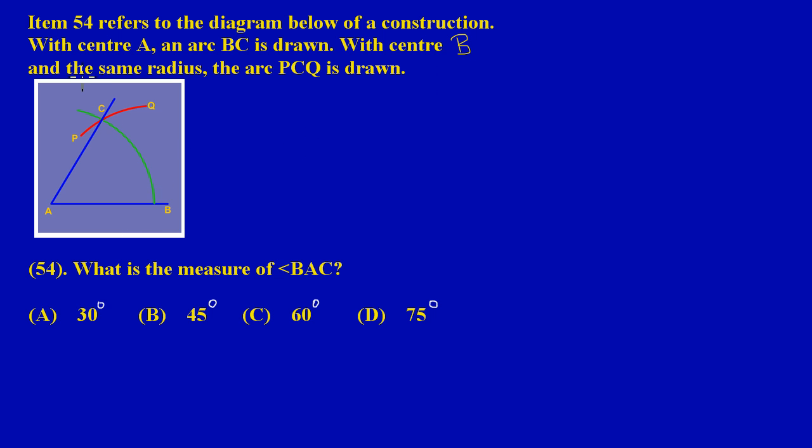What they are saying is, with center B and the same radius of the compass, another arc is drawn, PCQ. Now they're asking us what is the measure of angle BAC, so really they're asking us what is the size of this angle here.